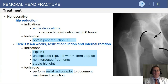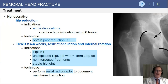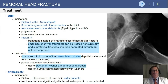Non-operative treatment can be considered for PIPKIN 1 fractures in which there is less than one millimeter of step-off, the fracture reduces nearly anatomically within the hip, and the hip joint itself is stable. These patients are evaluated with serial radiographs and treated with toe-touch weight-bearing. For PIPKIN 2 fractures with more than a millimeter of step-off, open reduction and internal fixation is typically indicated.